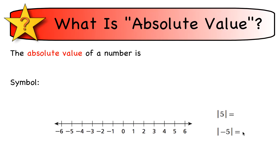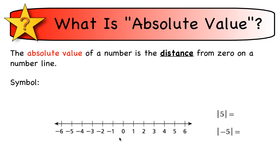So what is absolute value? We're going to start off talking about absolute value of numbers. The absolute value is basically the distance from zero on a number line. The symbol we use is two vertical lines, and that means find the absolute value, or the distance from zero on a number line.